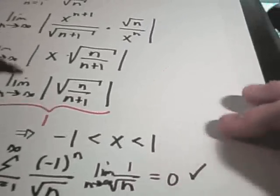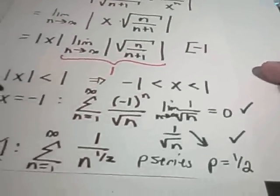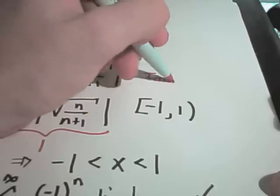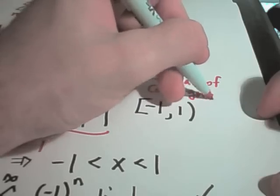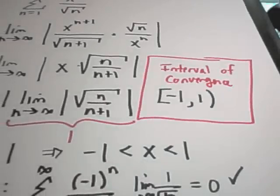In conclusion, the interval of convergence is from negative 1 — included, since we justified that x equals negative 1 works — up to but not including positive 1. So the interval of convergence is [-1, 1). The procedure is: use the ratio test, then check the endpoints separately.